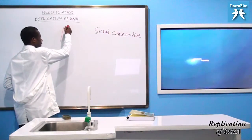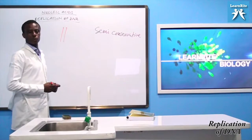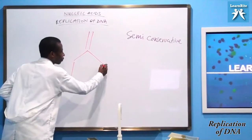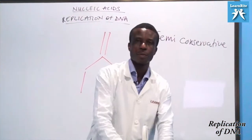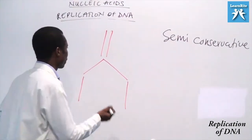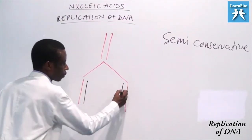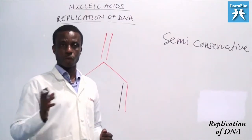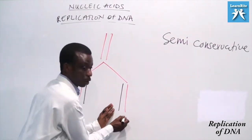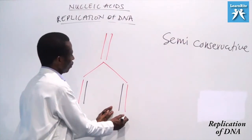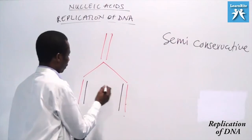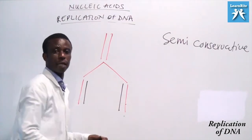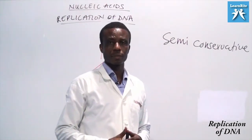So this is the original molecule. During replication, what happened? Each of the old strands becomes a template, and according to the base pairing rule we just described, this is the newly formed strand. So it is said to be semi-conservative because each new molecule has one old strand and one new strand. I hope it is clear.